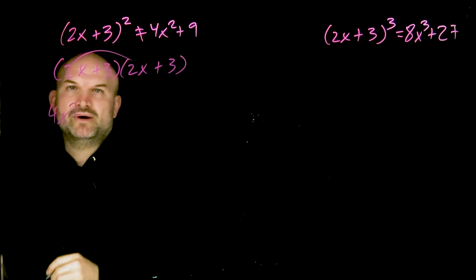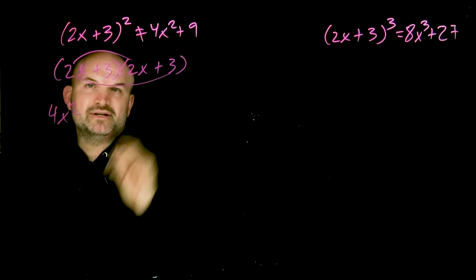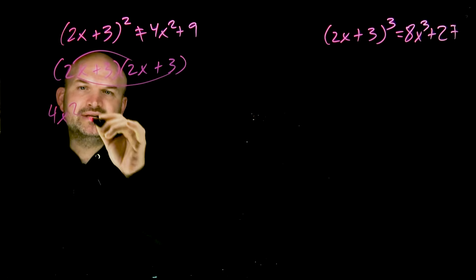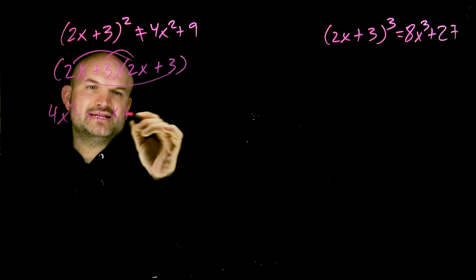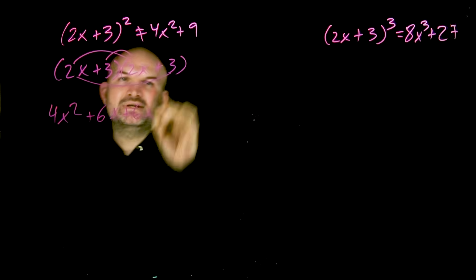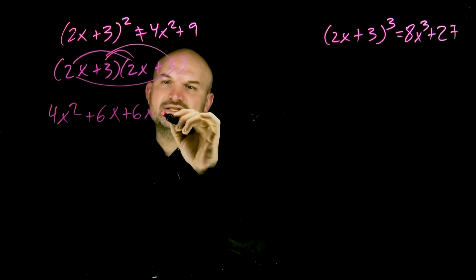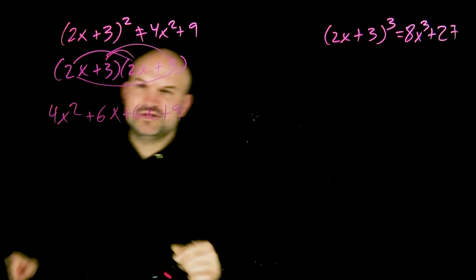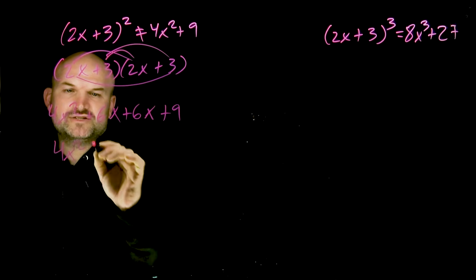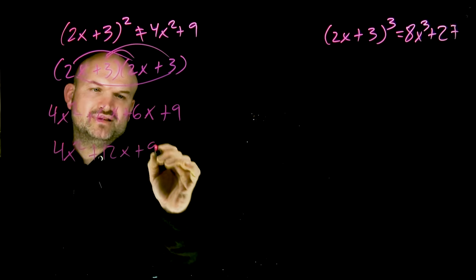Then I'll do my outer terms. 2x times 3 is positive 6x. Then my inner terms, 3 times 2x is again another positive 6x. And 3 times 3, which is my last two terms, is positive 9. Now, 6x plus 6x are common terms, so that gives me 12x. So 4x squared plus 12x plus 9.